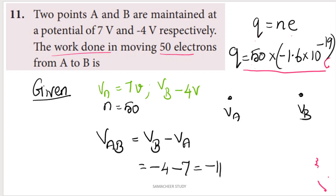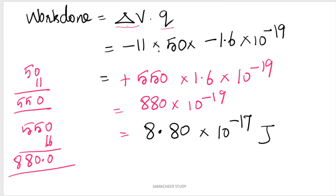The potential difference for moving electrons from A to B is VAB equals VB minus VA, which is minus 4 minus 7, giving minus 11 volts. Substituting delta V into Q, we get plus 8.80 into 10 power minus 17 joules. Be careful with the plus and minus signs. Option A is the right answer for question number 11.